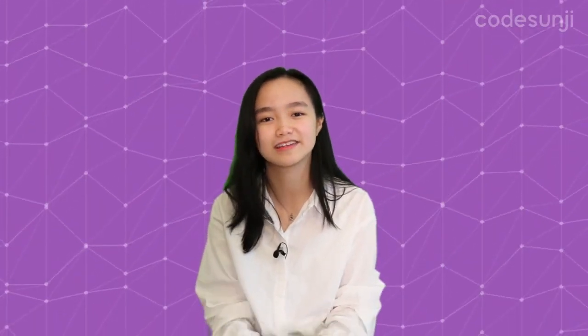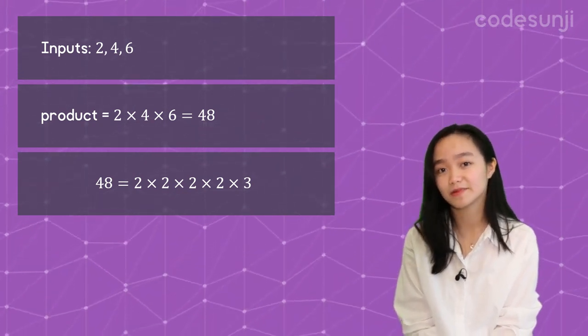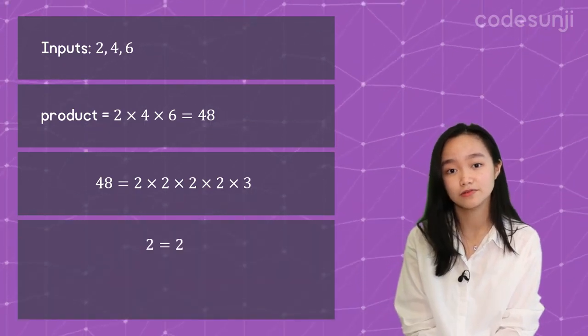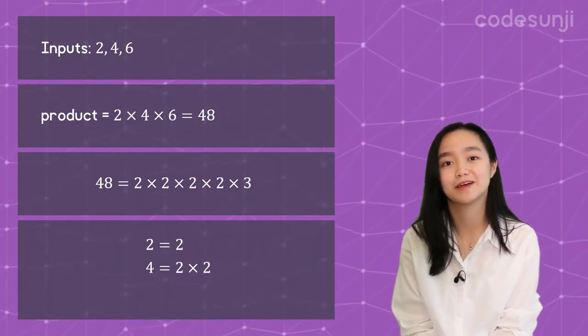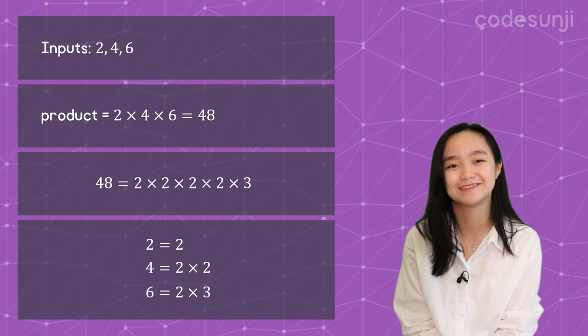Remember, we add 1 because we also include when the exponent of each prime factor is equal to 0. Finally, how do we handle the fact that the product can get so large it can't even be stored in a long long integer? Thankfully, the prime factorization of the product is just the prime factorization of all of the given numbers combined, so you don't even need to calculate the product at all. For example, 48 equals 2 × 2 × 2 × 2 × 3, which is just the prime factorizations of the given factors: 2 (which is 2), 4 (which is 2 × 2), and 6 (which is 2 × 3).